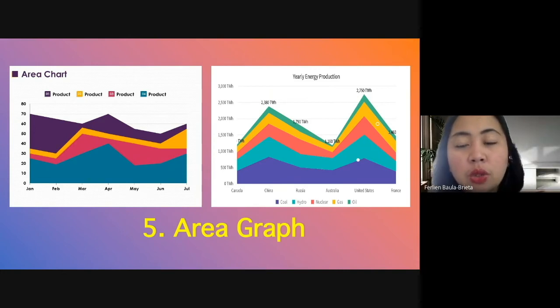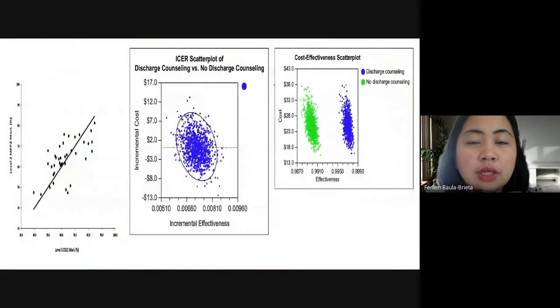So the more variables, the more it will give you a colorful output. Now the last one under graph is our scatter plot.